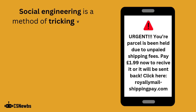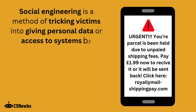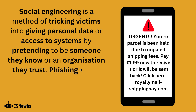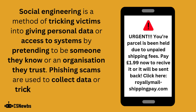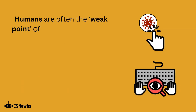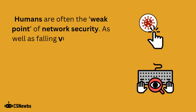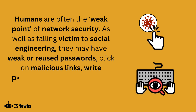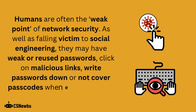Social engineering is a method of tricking victims into giving personal data or access to systems by pretending to be somebody they know or an organization that they trust. Phishing scams are used to collect data or trick users into installing malware. Humans are often the weak point of network security. As well as falling victim to social engineering, people may have weak or reused passwords, click on malicious links, write passwords down, or not cover passcodes when entering them.